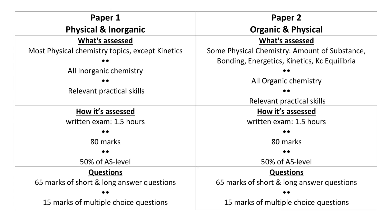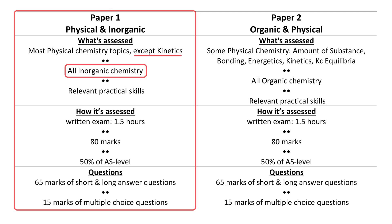Before deciding which topics you need to prioritize, it's important to understand what could be assessed on Paper 1. Paper 1 is physical and inorganic chemistry, and as such, all of inorganic chemistry can be assessed and most of physical chemistry can be assessed, with the exception of the kinetics topic. The paper is worth 80 marks, with 65 short answer questions and 15 multiple choice questions.